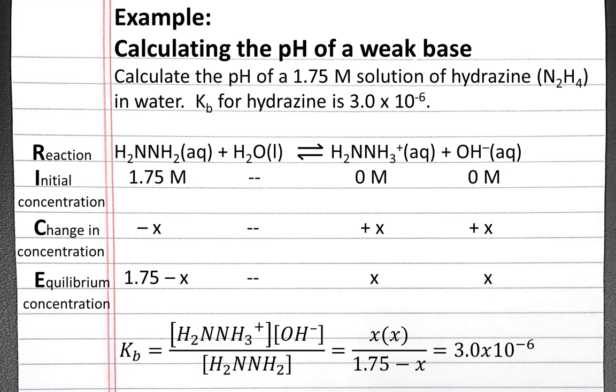So that will be at equilibrium x times x divided by 1.75 minus x, and that will equal 3 times 10 to the negative sixth, which is the Kb value for hydrazine.